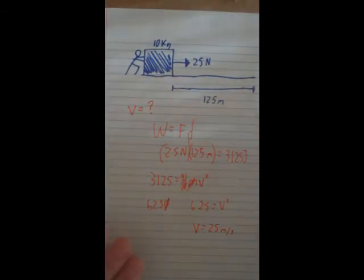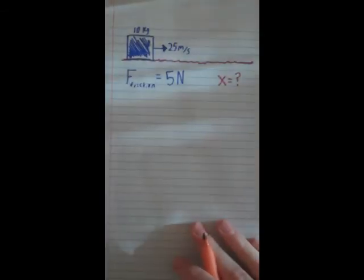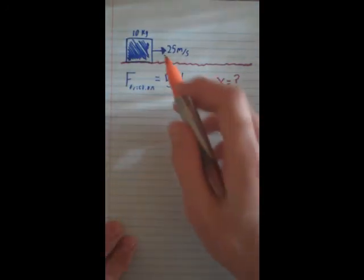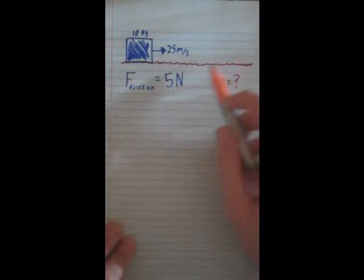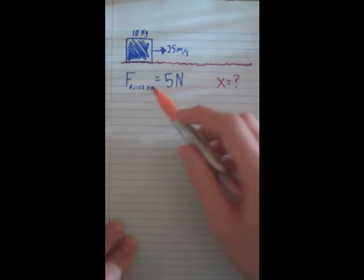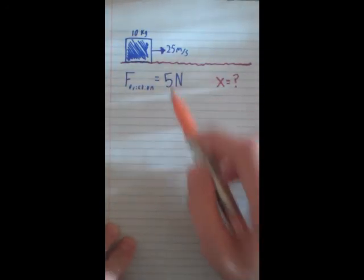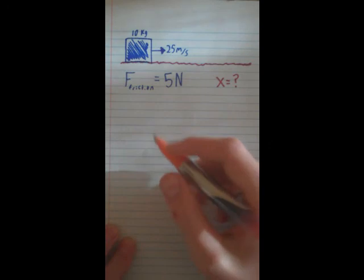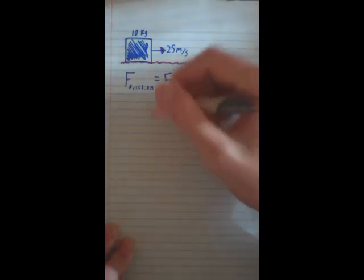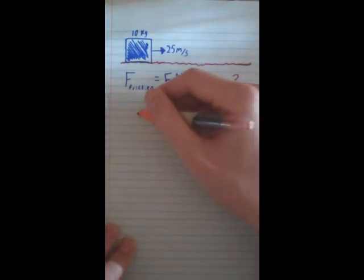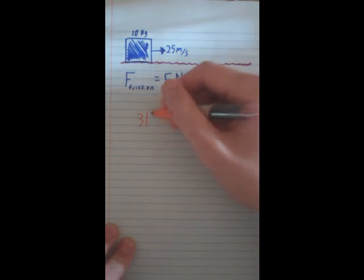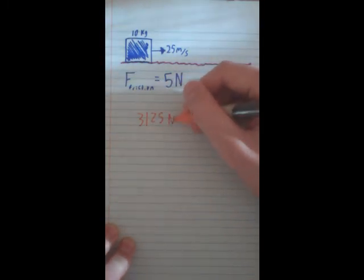And then I have a follow-up question to that one, which is how far will it go if it's going on a rug, and the rug has a frictional force of 5 newtons. So we just figured out last problem that when we let go of it, it had 3,125 joules worth of energy.